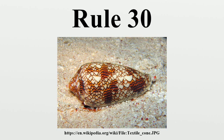The number of black cells at each generation is given by the sequence 1, 3, 3, 6, 4, 9, 5, 12, 7, 12, 11, 14, 12, 19, 13, 22, 15, 19, and is approximately proportional to generation number, as is apparent from the image above.